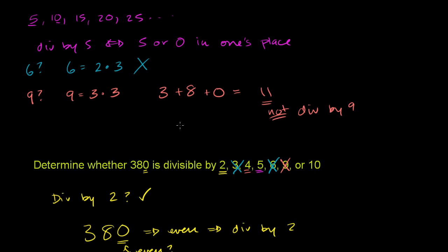So lastly, we have the number 10. And this is in some level the easiest one. What do all the multiples of 10 look like? 10, 20, 30, 40. We could just keep going on and on. They all end with 0. Or if something ends with 0, it is divisible by 10. 380 does end with 0, or its ones place does have a 0 on it. So it is divisible by 10. So we're divisible by all of these numbers, except for 3, 6, and 9.